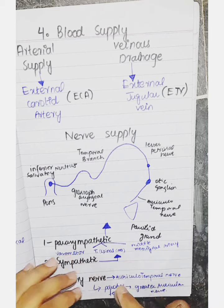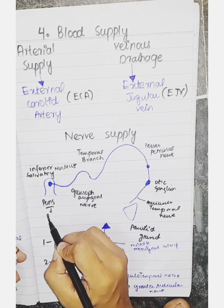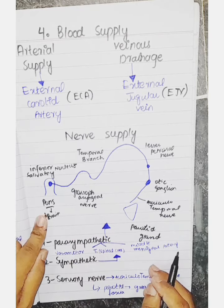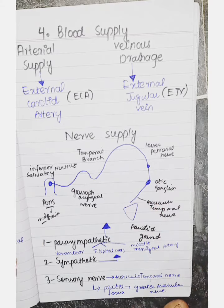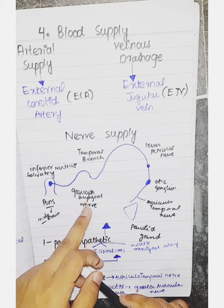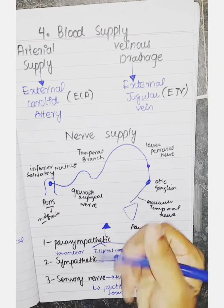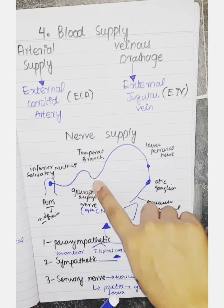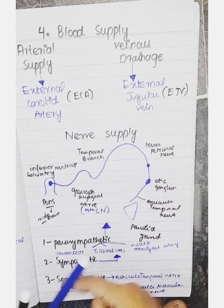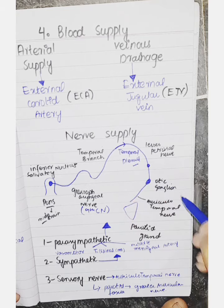Now the main topic is nerve supply, which is a little complex but we will understand it quickly. In our brainstem — in the pons — there is a structure called the inferior salivatory nucleus, which we study because the parotid is a salivary gland. From this nucleus, a branch arises called the glossopharyngeal nerve, which is the ninth cranial nerve. It gives a tympanic branch, which forms the tympanic plexus.